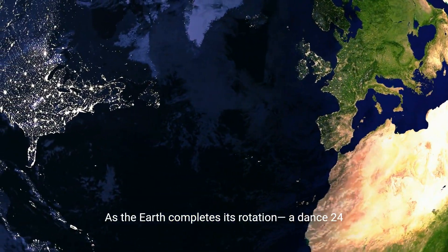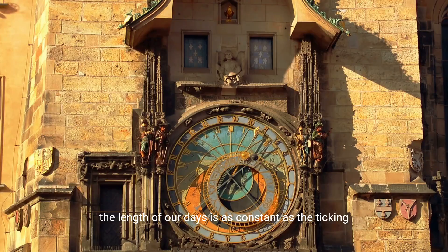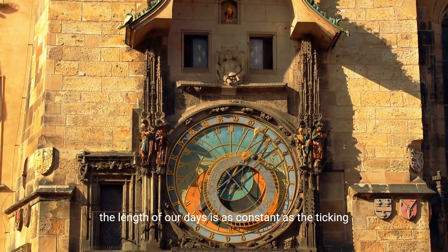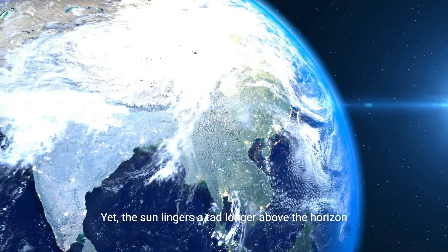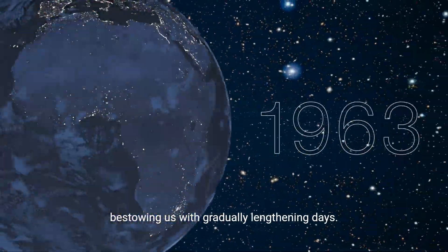As the Earth completes its rotation, a dance 24 hours in the making, we might assume the length of our days is as constant as the ticking of a clock. Yet, the sun lingers a tad longer above the horizon with each passing eon, bestowing us with gradually lengthening days.